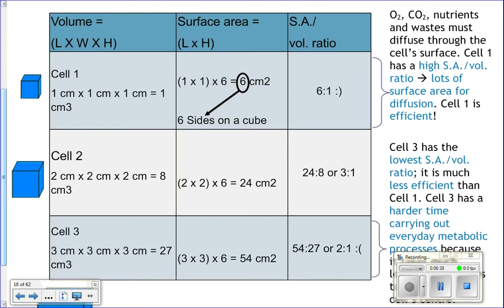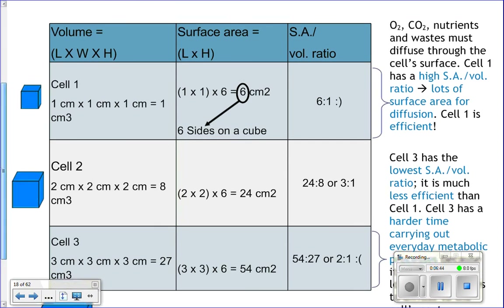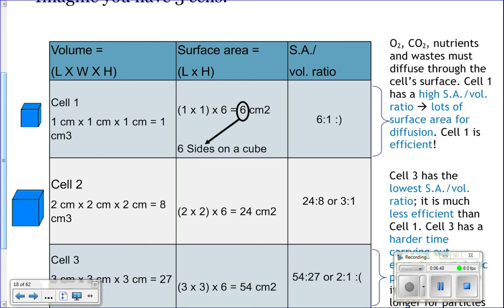Let's look at three different cells of different sizes to see why that limits cell size. Our first cell is one centimeter — we'll say cells are cubes. Volume is length times width times height: one times one times one equals one centimeter cubed. Surface area is length times height times six sides: one times one times six equals six centimeters squared. So your ratio is six to one.